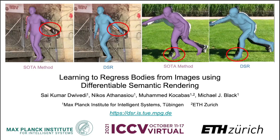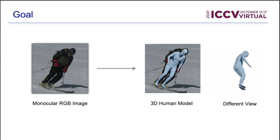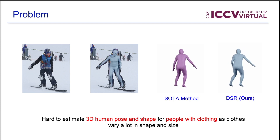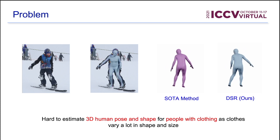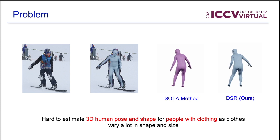Today I'm going to present our work on learning to regress bodies from images using differentiable semantic rendering. The goal of our work is to estimate a 3D human model from a monocular RGB image. It is hard to estimate 3D human pose and shape for people with clothing, as clothes vary a lot in shape and size.